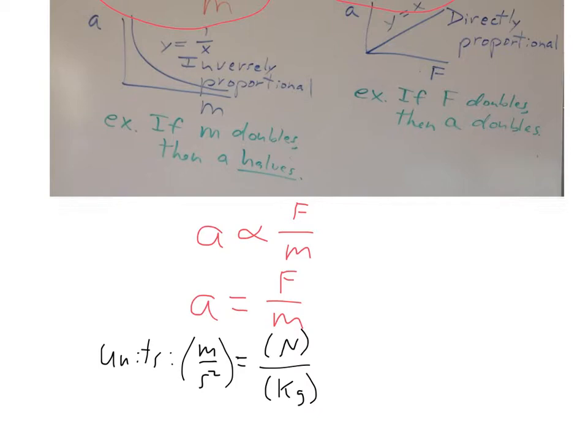So it might seem a little unusual: how do we get meters per second squared from doing Newtons divided by kilograms? Well remember that a Newton is the same as a kilogram times a meter per second squared. And so when we substitute that in here we get kilogram meter per second squared divided by kilograms, and the kilograms are going to cancel.